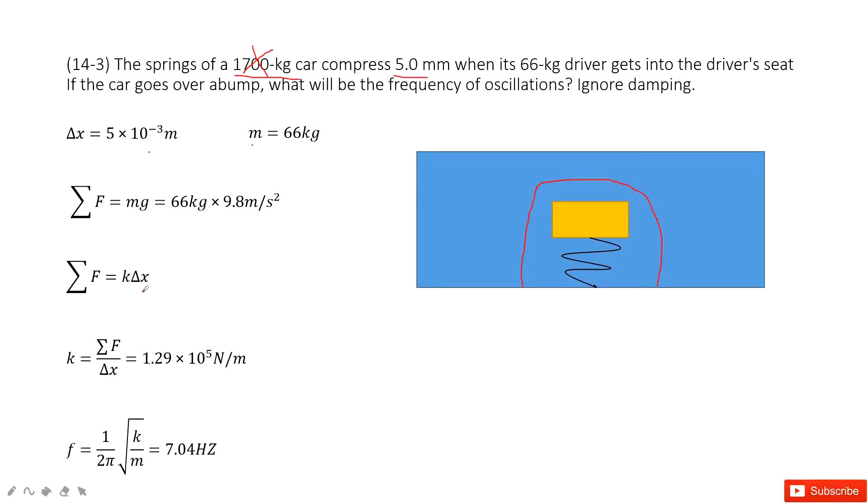Now we can see in this equation, we can find net force equal to k times delta x. Right? Elastic force equal to k times delta x. Now this force is just equal to gravity acted by the driver. So mass times g. And then delta x is given. So in this equation...